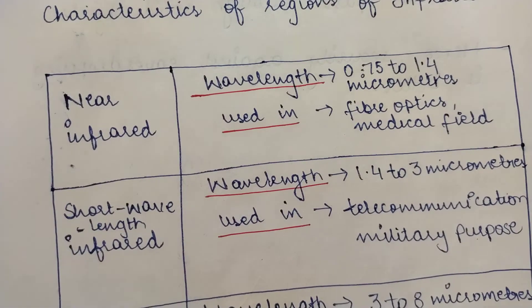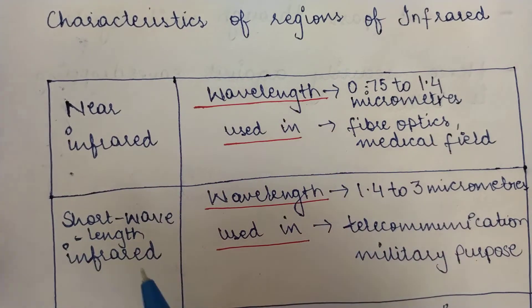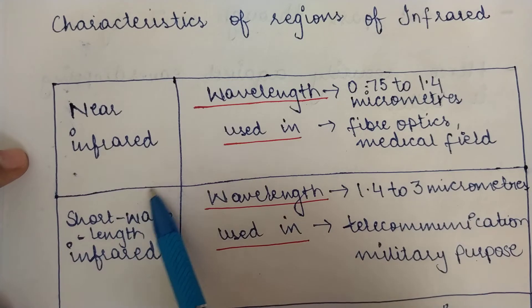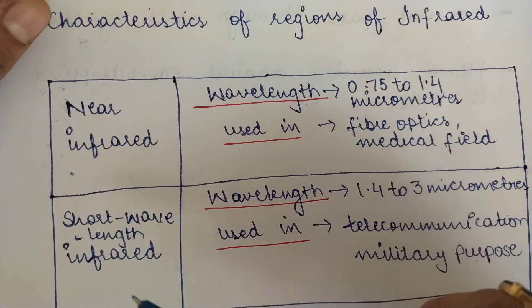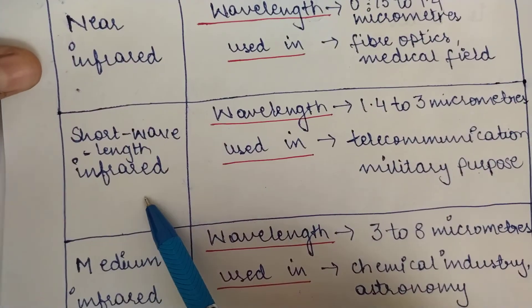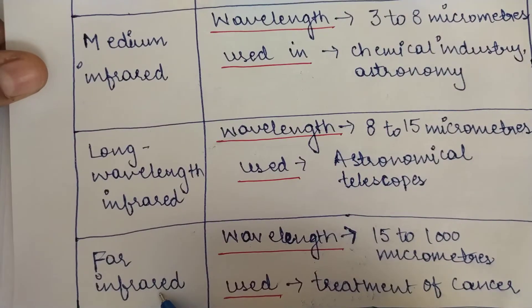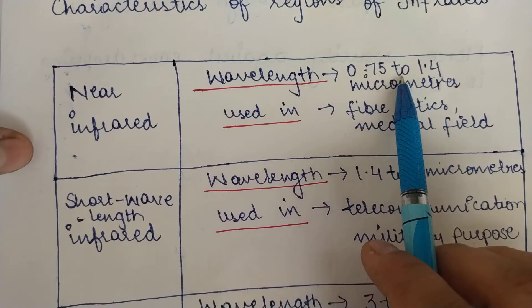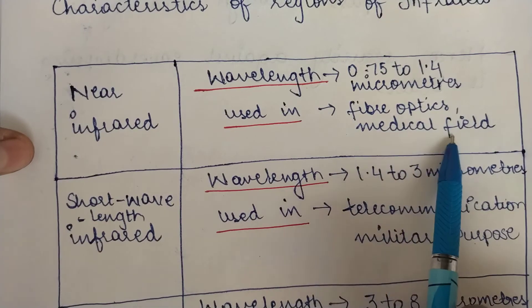A more detailed classification of infrared waves divides them into five categories. The first is near infrared, with a wavelength between 0.7 to 1.4 micrometers, used in fiber optics and the medical field.